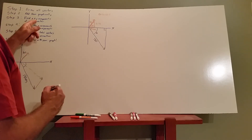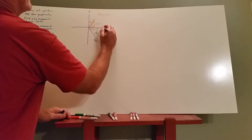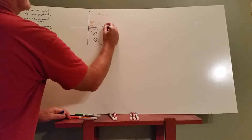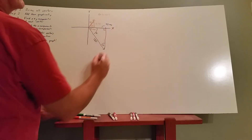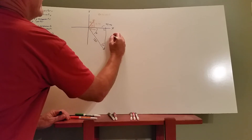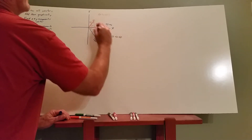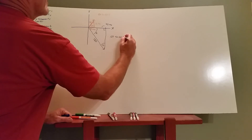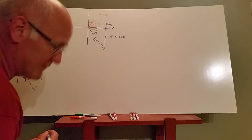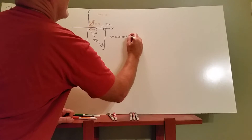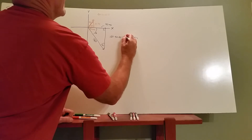Finding the x and y components of the aircraft vector: the side opposite the 30 degree angle is half the hypotenuse, so the x component is 90 meters per second. The y component is given by 180 times sine of 60 degrees, which gives us 155.9 meters per second, and it will be in the negative y direction.